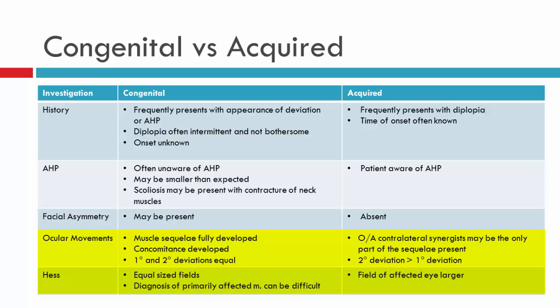In contrast, with recent acquired deviations, we're expecting that we might see a muscle sequelae, or we may simply see the overaction of the contralateral synergist. We should be able to see on the HES chart a distinction between the primary and secondary deviation, and the secondary deviation should be greater than the primary, both in Hess testing and on the HES chart.